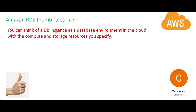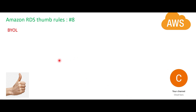A database instance is a very commonly used term — it is primarily comprised of compute and storage. If you have already invested in thousands of licenses for Oracle or SQL Server on premises and don't want to waste them, AWS has a concept called BYOL — Bring Your Own License. You can put these databases on an EC2 instance and reuse the same licenses; your investment will not be wasted.